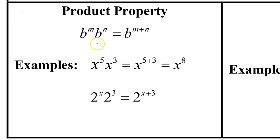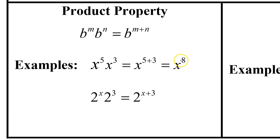The product property says that if you multiply with like bases, you add the exponents. For example, x to the fifth power times x to the third power will be x to the 5 plus 3 power, which is x to the eighth power. Or if you have 2 to the x times 2 to the 3, that would be the same as 2 to the x plus 3.